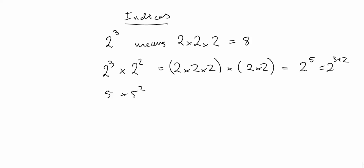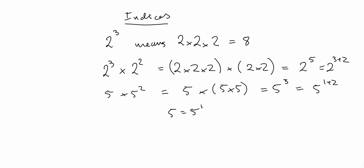Similarly, if we had 5 times 5 squared, that would be 5 times 5 times 5. We can see we have three 5's multiplied, which is 5 cubed. This came from 1 and 2, so that is 5 to the 1 plus 2. 5 is 5 to the power of 1, so 5 to the 1 times 5 squared is 5 to the 1 plus 2, which is 5 cubed.